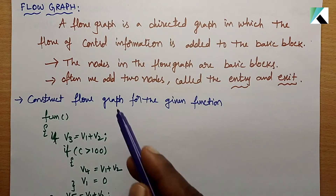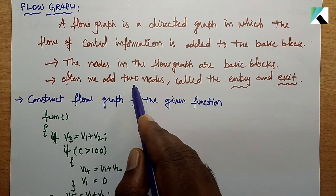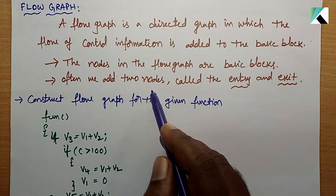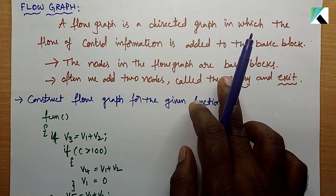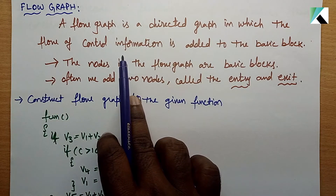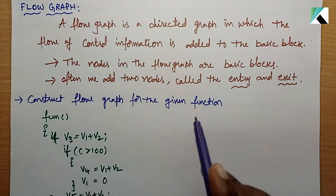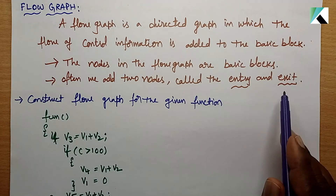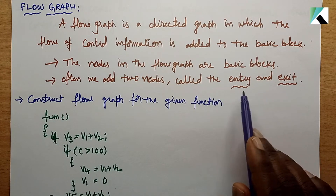Often we add two nodes to the basic blocks. We will add two nodes: entry and exit.